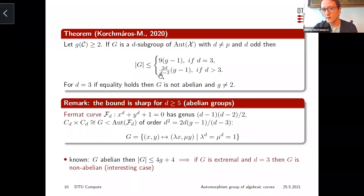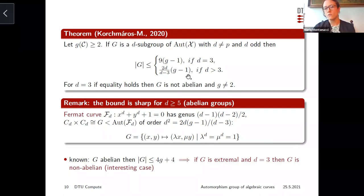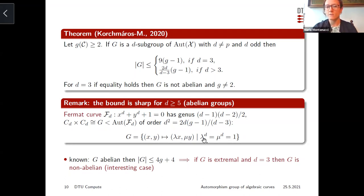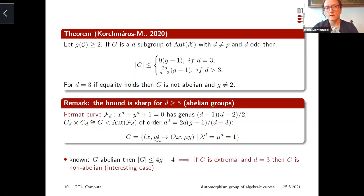This is particularly interesting because an abelian automorphism group of a curve of genus g has order at most 4g. The sharper bound for d ≥ 5 is larger than 4g but smaller than this intermediate value, meaning curves achieving this bound are forced to have a non-abelian group. But for d ≥ 5, the bound can be realized by an abelian group using the Fermat curve of degree d, which has genus g and an abelian group of order d^2 of automorphisms mapping (x,y) to (λx, μy) where λ and μ are primitive d-th roots of unity.